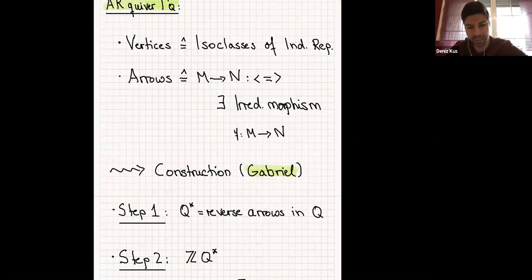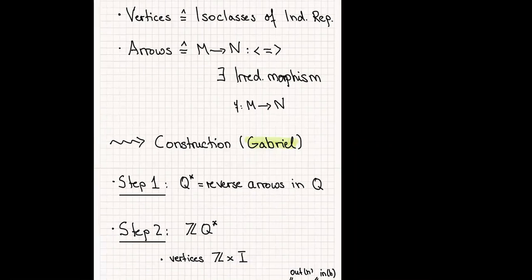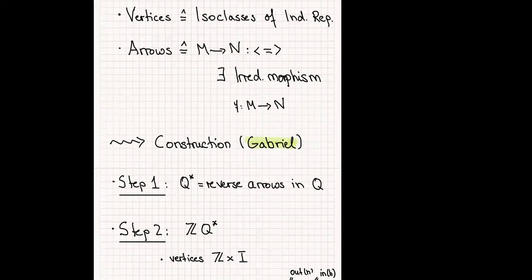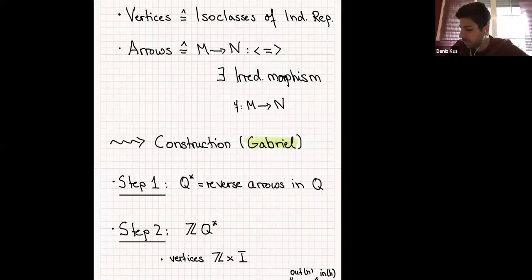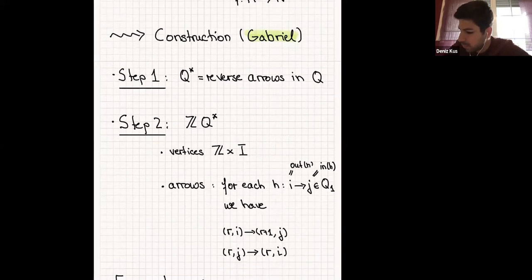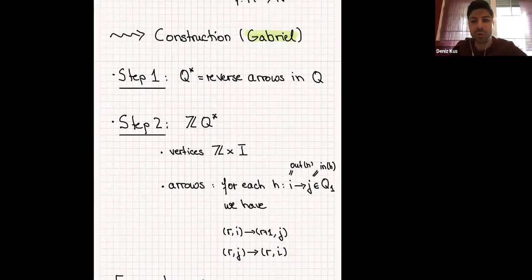What is ZQ*? The vertices are given by Z cross I. So the vertices are of the form (r, i) where r is an integer and i is in the indexing set of the quiver. The arrows are: for each original arrow in Q1, you take two additional arrows.